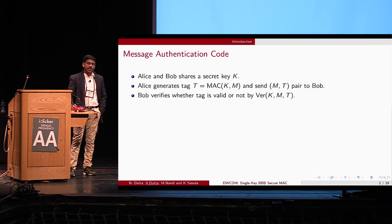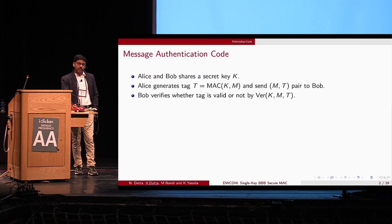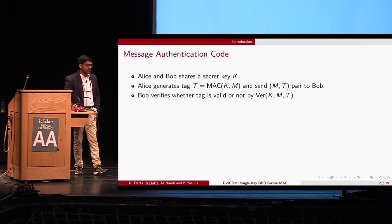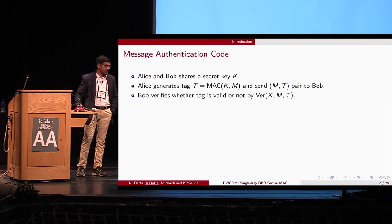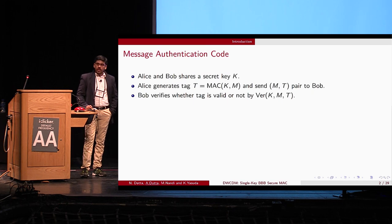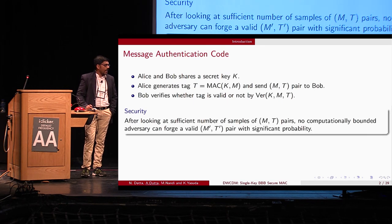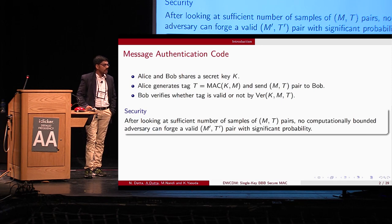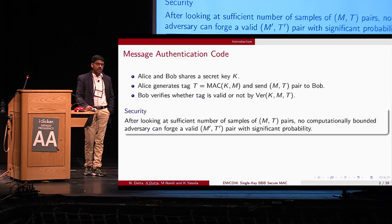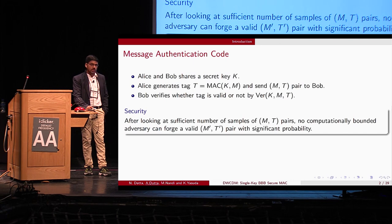Upon receiving it, Bob verifies whether the tag is valid by applying a verification algorithm on key K, message M, and tag T. The security notion of a MAC says that after looking at a sufficient number of valid message-tag pair samples, no computationally-bounded adversary can forge a valid message-tag pair with significant probability.